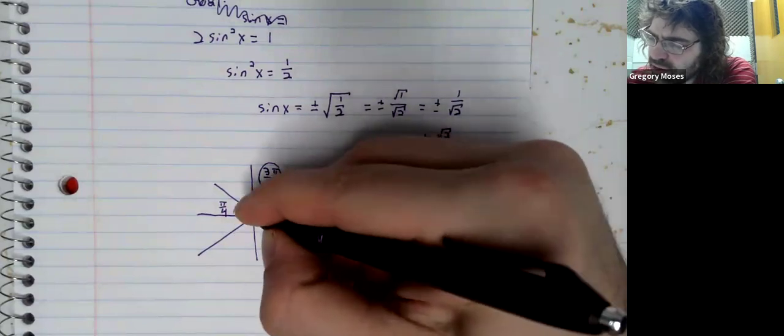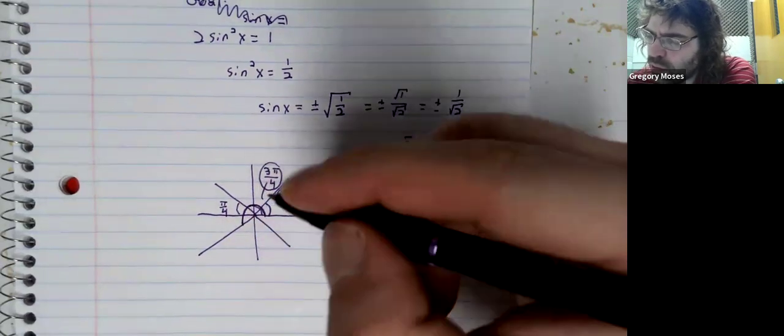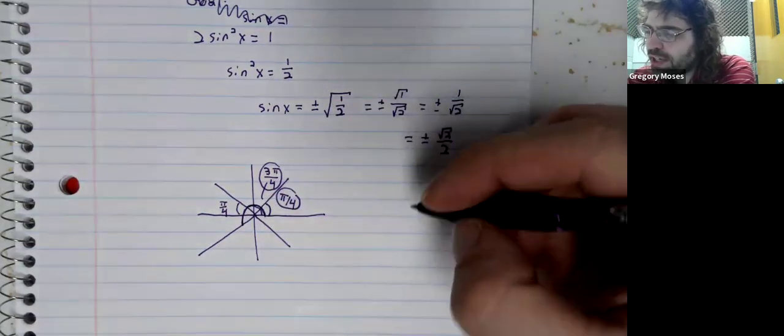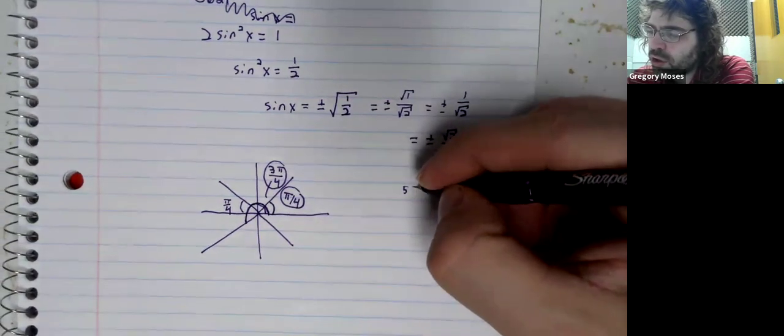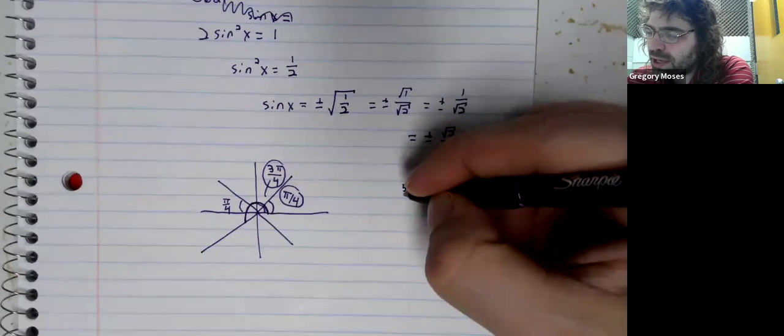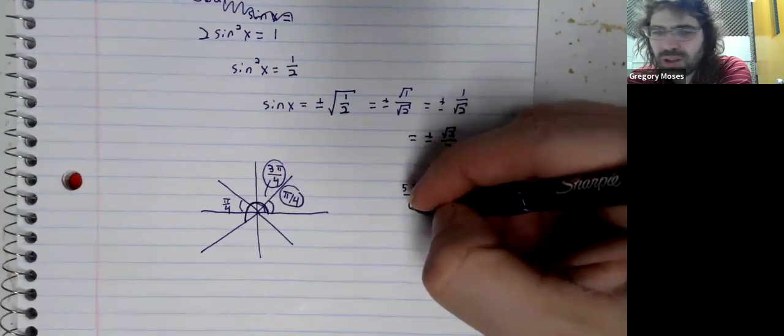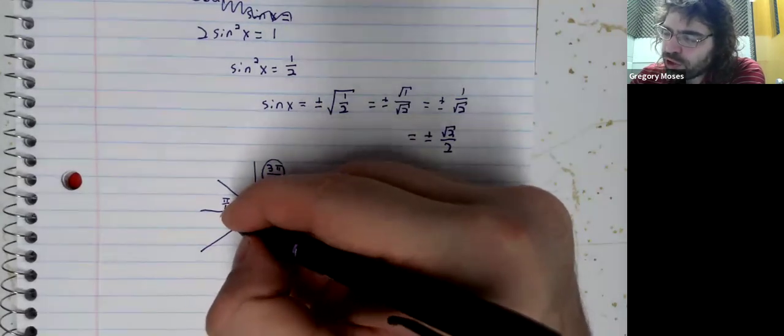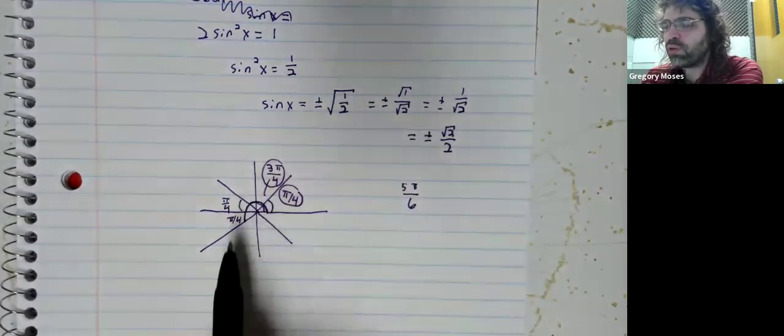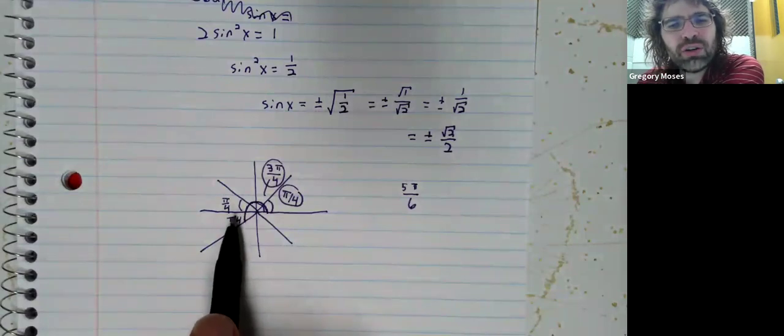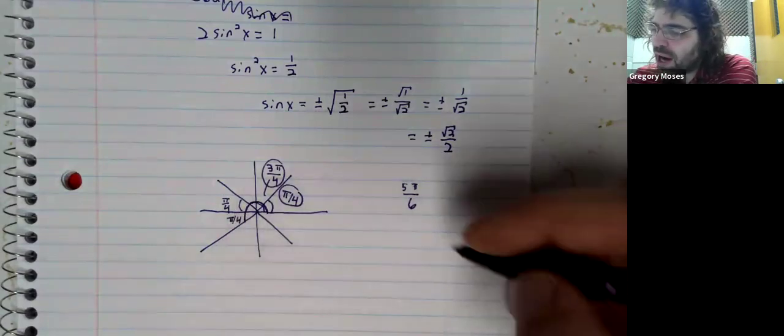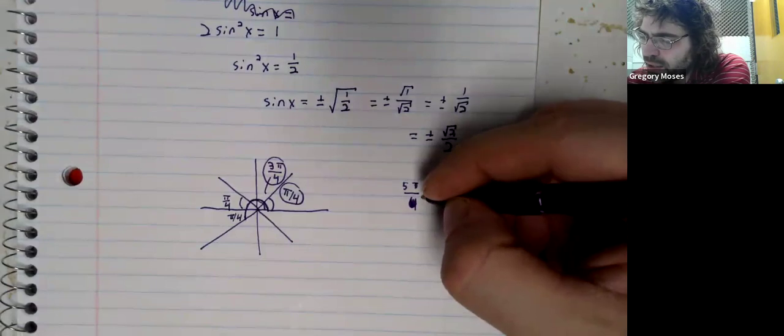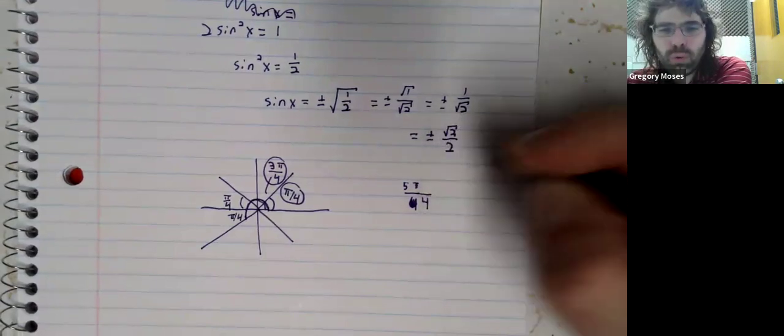This angle. So I'm just going to jot it down over here because I'm running out of space and things are getting a little chaotic. The angle in the third quadrant that has pi over 4 as its reference angle is 5 pi over 4.